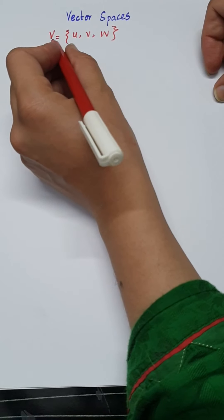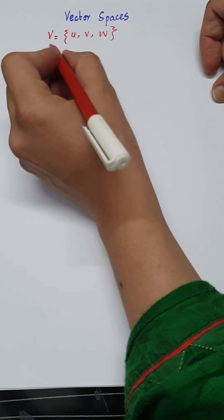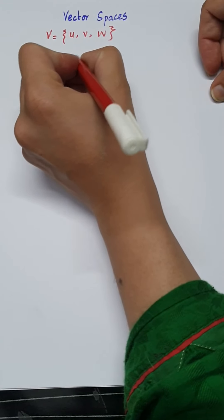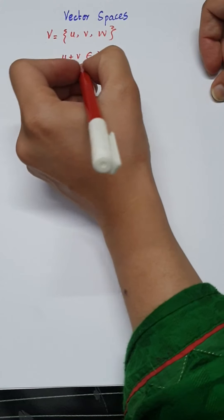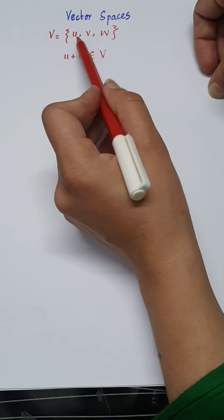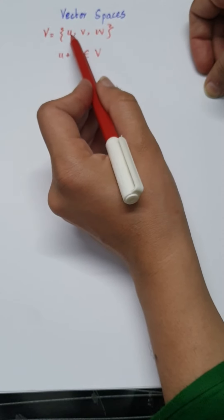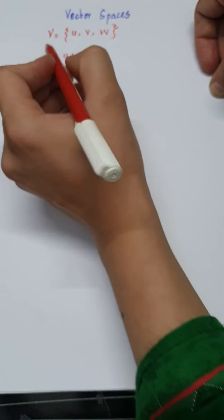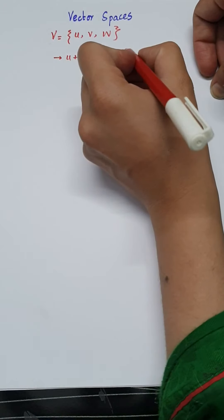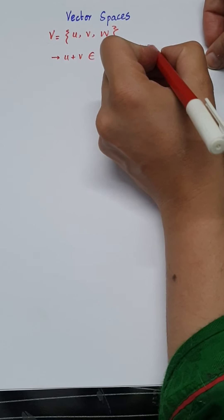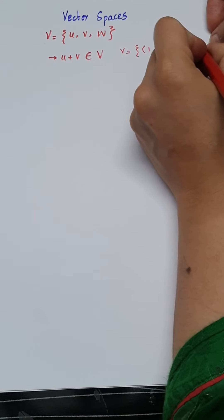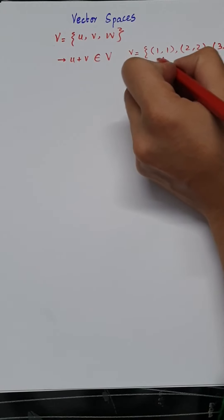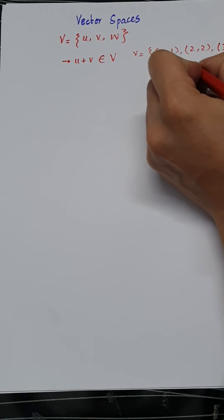then we claim that this set of vectors actually forms the vector space V. The first property is U plus V must belong to the set of vectors V. It means if you add any two vectors from this set and the resultant is also present in the set of vectors, then V is a vector space. For example, let's say V equals {(1,1), (2,2), (3,3), (-2,-2)}.